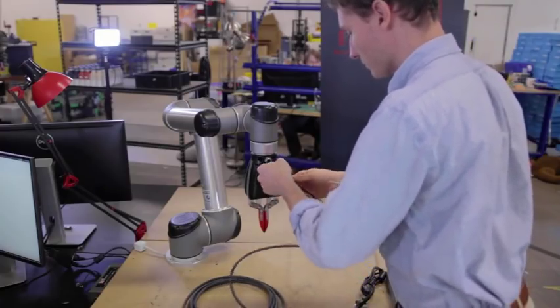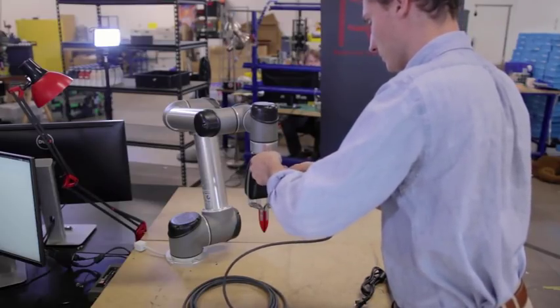Now connect the combined power and data cable to the plug close to the robot's wrist.